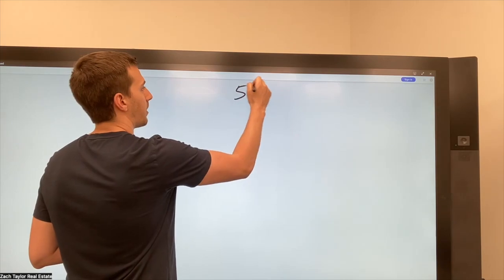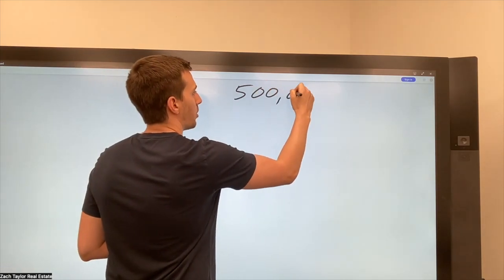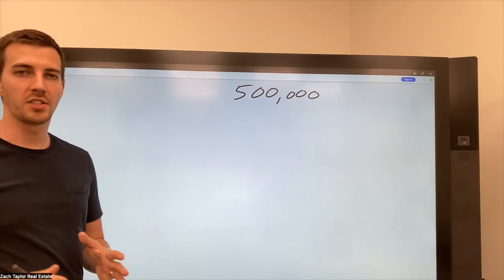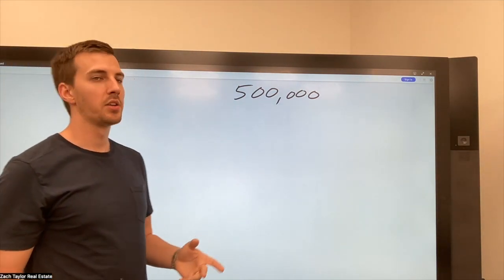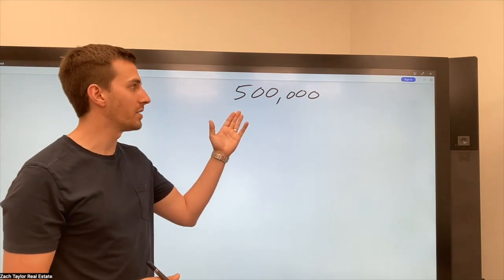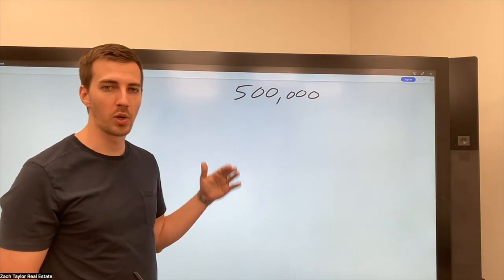So let's go ahead and write that down. If the house sold for 500,000. Now we're going to have to know, obviously there's going to be costs and they're not going to net exactly 500,000. So what costs have to go into this calculation to determine what they would actually net.